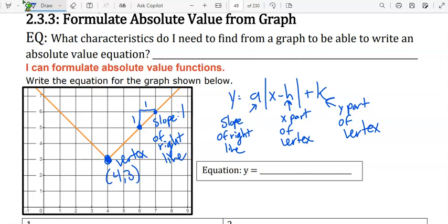So the equation is going to be y equals 1 times the absolute value of x minus h, which is 4, and then plus 3.